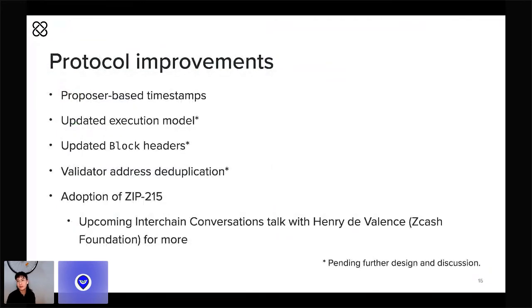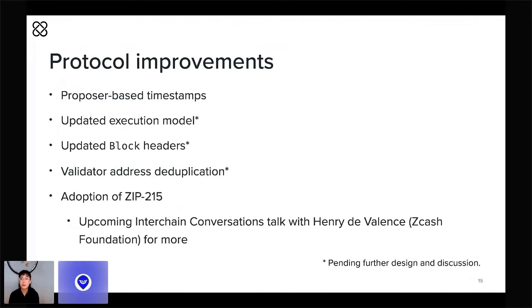We've begun by considering some high-priority changes to the consensus and block protocols. One major change is to the way Tendermint handles block time. Right now, the block's timestamp is the median of the timestamps in pre-commits from all validators who have pre-committed to the block. For increased light-client security, we want to switch this timestamp so that it comes only from the block proposer. Other validators would then be expected to only vote for the block if its timestamp is within some range of their own clock.